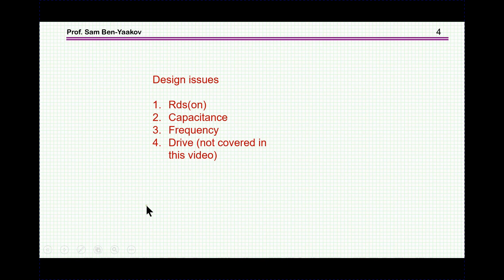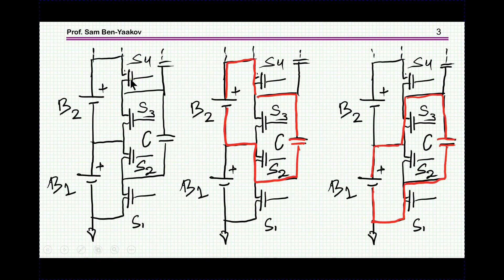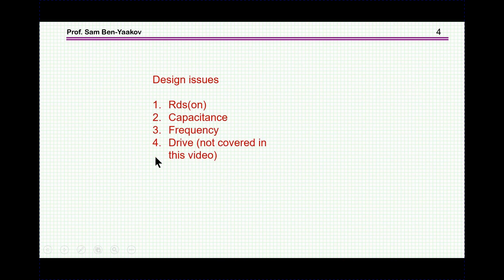Now, what are the design issues of a system like that? First of all, the major question: what should be RDS-on? And then the capacitance, the frequency of switching, and also there is a question of drive, because we have transistors sitting at a high voltage and we have to drive them on and off, so we need some sort of a drive. This is an issue I'm not considering in this presentation — hopefully it'll be in the next one.